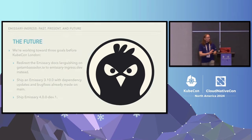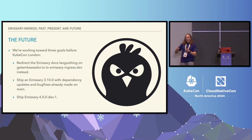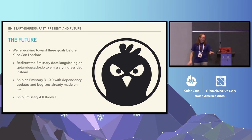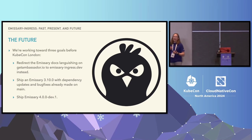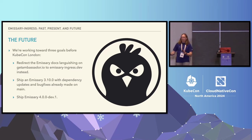These are all short-term things I really want to get done before London. Get the docs to a point where getambassador.io's docs redirect to emissary-ingress.dev, so we can rip it all out from getambassador.io, have it in one place, understand who's maintaining it, and have it all working. Ship Emissary 3.10.0 — 3.9.1 is the most recent Emissary release that's really out there. There have been a lot of changes since then that went into main but have never been packaged into a release, so I want to fix that.